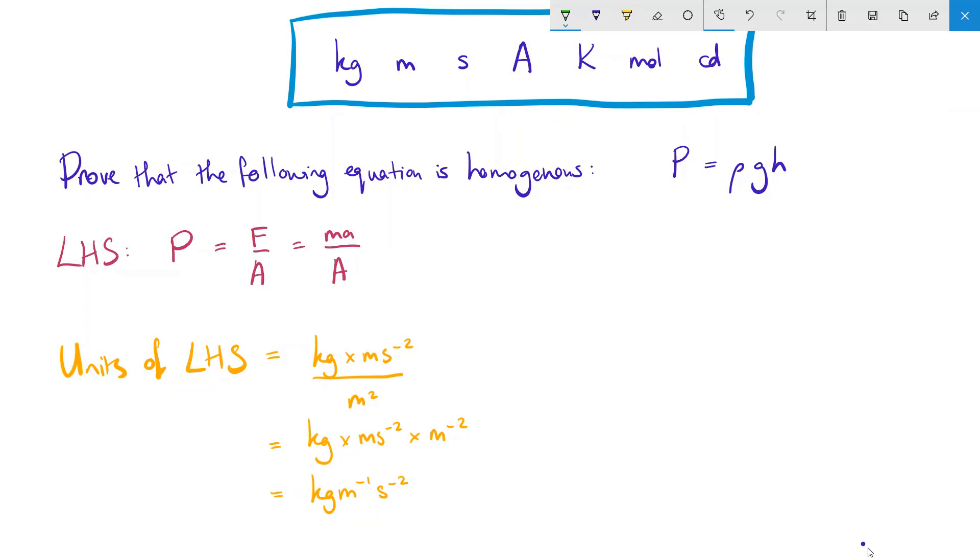Now for the right-hand side. Now in fact, the units of the right-hand side are already all expressed in terms of the list. As we have density, that's kilograms per metre cubed. G, the acceleration of freefall, that's metres per second squared. And height, that's metres. So in fact, we can go straight to units this time.